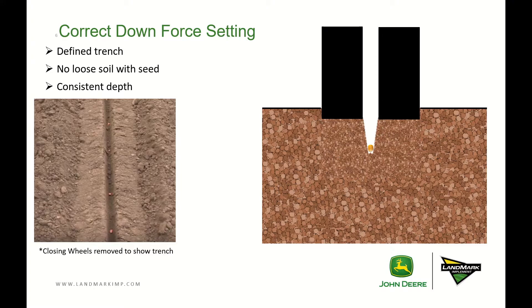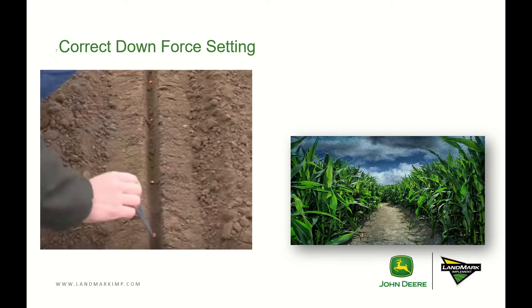For a correct downforce setting, we want to see a defined trench with no loose soil with seed, as well as consistent depth. It's easy to verify this if you have the closing wheels tied up or removed to see our spacing as well as the correct seed depth. Here's another picture of the correct downforce setting. We should see uniform emergence throughout the field when the stands come up, showing that we had our correct downforce set.